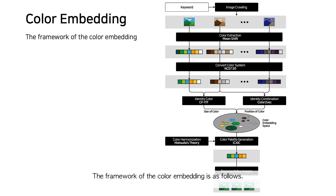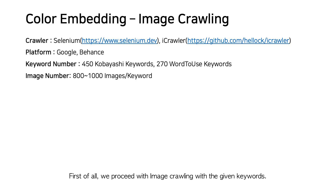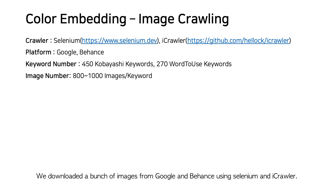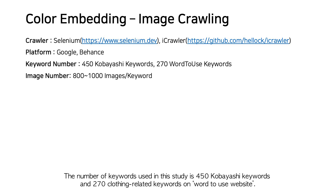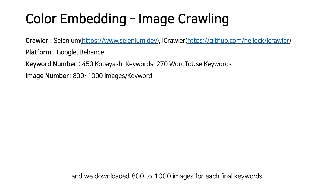The framework of the color embedding is as follows. First, we performed image crawling with the given keywords. We downloaded images from Google and Behance using Selenium and iCrawler. The number of keywords used in this study is 450 Kobayashi keywords and 270 clothing-related keywords from the Word2Use website, and we downloaded 800–1000 images for each keyword.